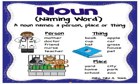Here are some other examples of noun or naming words. A noun names a person, place, or things. Examples of person: mother, doctor, friend, nurse, or teacher. Things: book, cup, hat, apple, grass, car, etc. Here are some places — yard, home, school, city, park, zone.